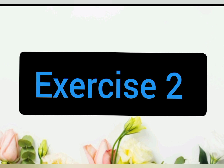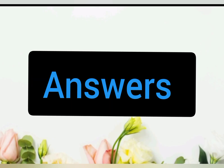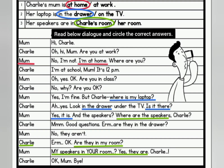Let's proceed to the next exercise. In this exercise, you have to read the dialogue and circle the correct answers. Dan latihan ini anda perlu baca dialog tersebut dan bulatkan jawapan yang betul, for one, two and three. Have you finished? Let's check the answers together. One — Charlie's mom is at home. And two — her laptop is in the drawer. And three — her speakers are in Charlie's room. Well done, everyone.